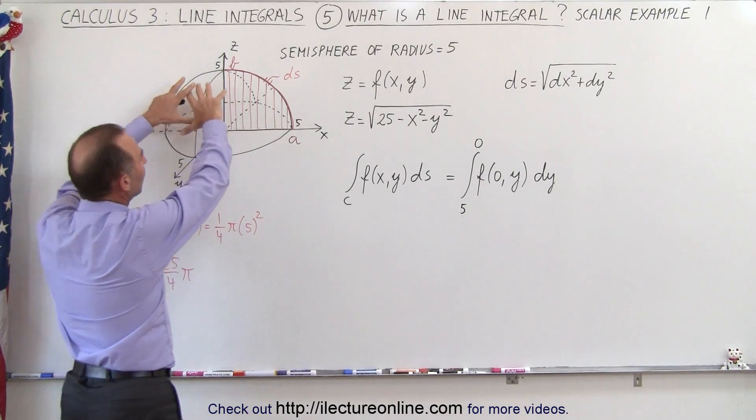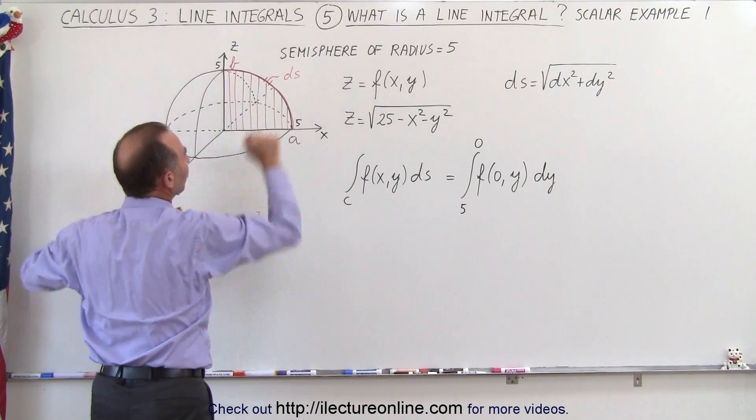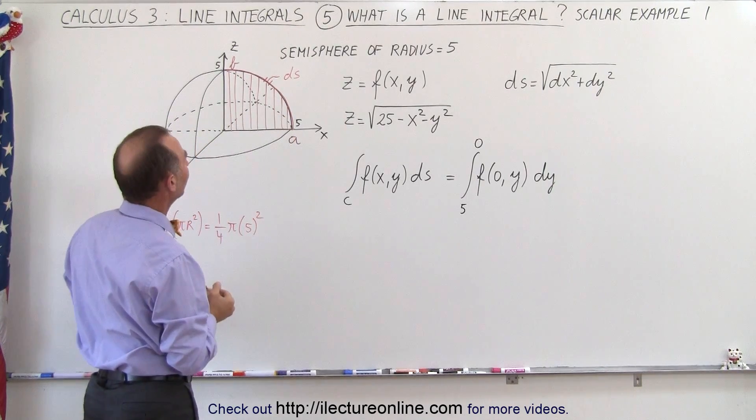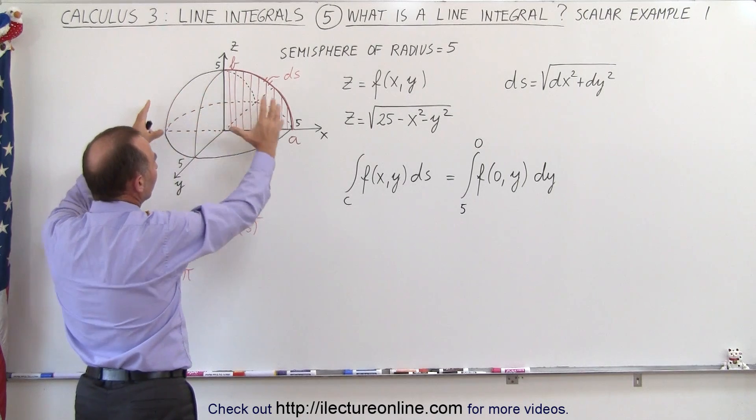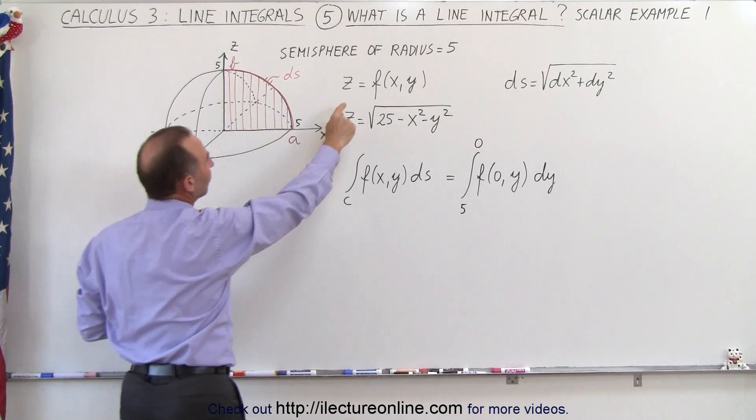So let's say we start off with a semi-sphere that has a radius of r, and r being equal to 5.